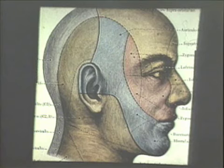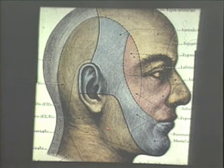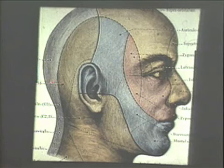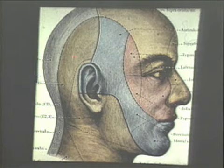The trigeminal system supplies all of the face, with the exception of the angle of the mandible and the posterior portion of the head, which are supplied by the cervical plexus and the second spinal nerve.